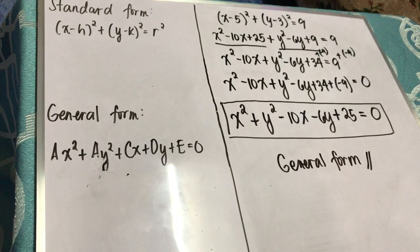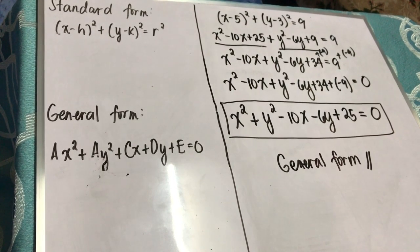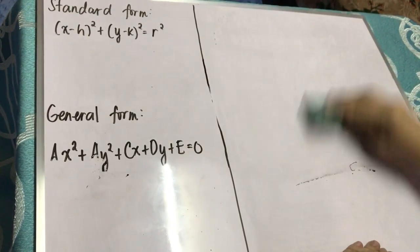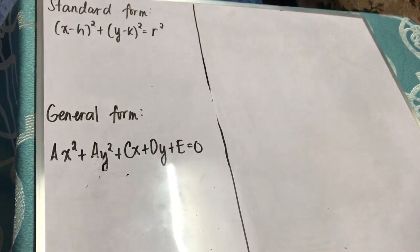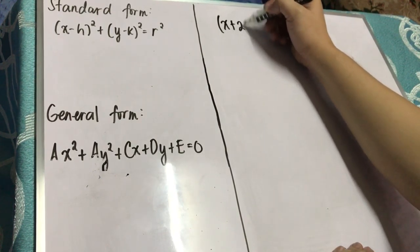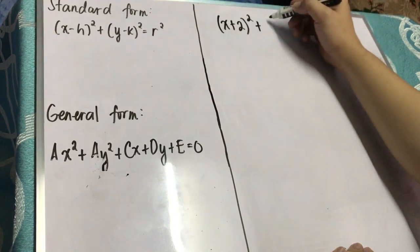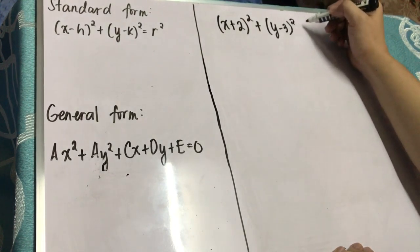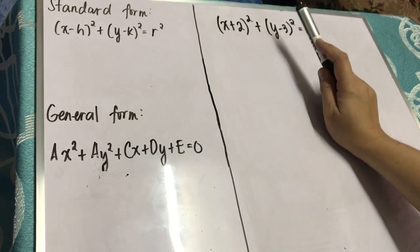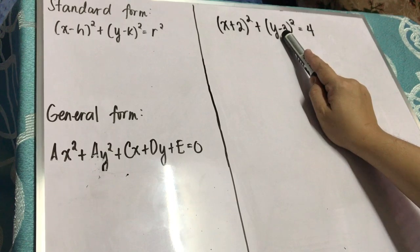Let's try to have another example. For our second example, the given equation is the quantity of x plus 2 squared plus the quantity of y minus 3 squared is equal to 4. Our goal here is to transform from standard form to general form.